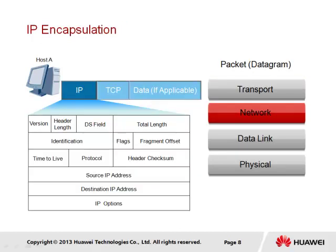The IP header is added to the segment to form a packet, along with the population of relevant fields, including the source and destination IP addresses. Since the protocol prior to IP is TCP, the protocol field will be populated with the hexadecimal value 06. The total size of the packet in this form is expected to be no larger than 1500 bytes.